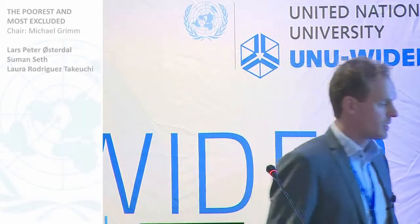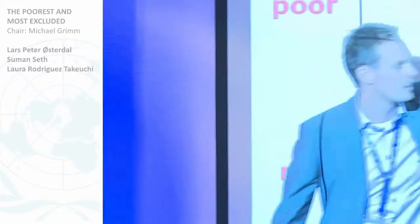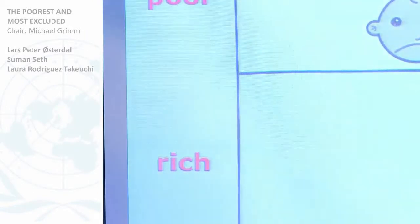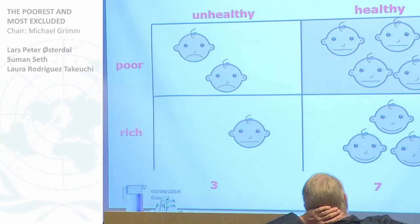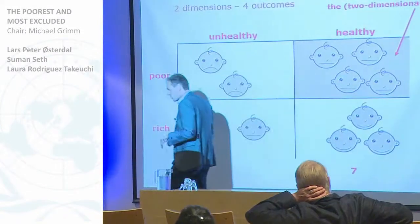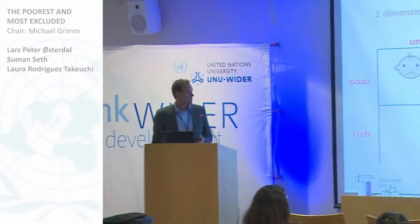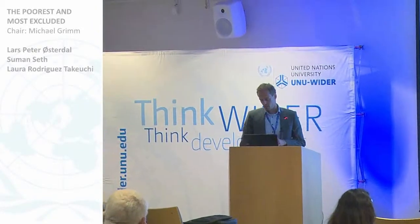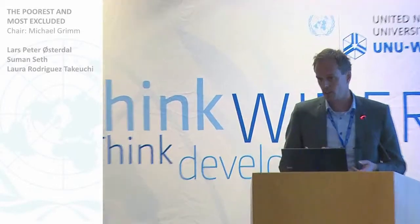So here, in this case, we have the marginals here. There are three here and there are seven healthy. So there are six poor and there are four rich. It's simply the median along each dimension that we combine into the multidimensional median. And it has been argued in the mathematics literature that that is the only natural multidimensional median concept for ordinal data.